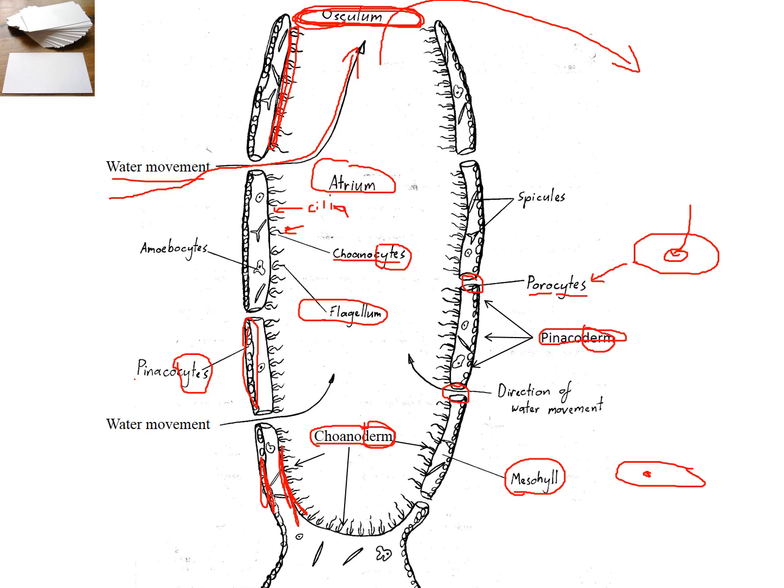So the cells that move through the body of the sponge are called amoebocytes, and we see the root cyte again. And that is an amorphous or without shape type cell that will pick up the digested food from the pinacocytes that's been caught on the cilia. And then it will take that food and share it with the rest of the colony. So it will take the food particles that have been caught by the cilia and then move around through the mesohyle and share the food with the pinacocytes. And they also have another job, which is to secrete these things called spicules.